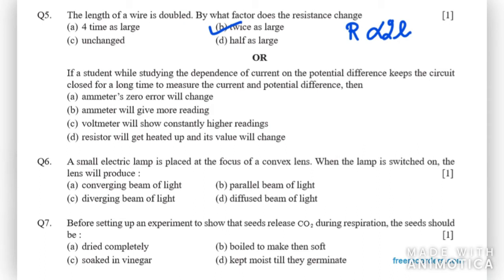In the second part, if a student while studying the dependence of current on potential difference keeps the circuit closed for a long time to measure the current and potential difference, then: ammeter zero error will change? No. Ammeter will give more readings? No. Voltmeter will show constantly higher readings? No. Resistor will get heated up and its value will change? Yes. As it says the circuit is kept closed, that means current is in the circuit and there will be some heating up. Heat is directly proportional to current. If current is there, heat will go up. So the resistor will get heated up and its value will change.